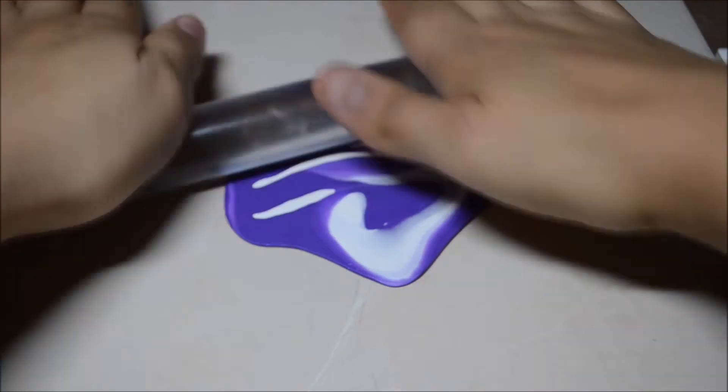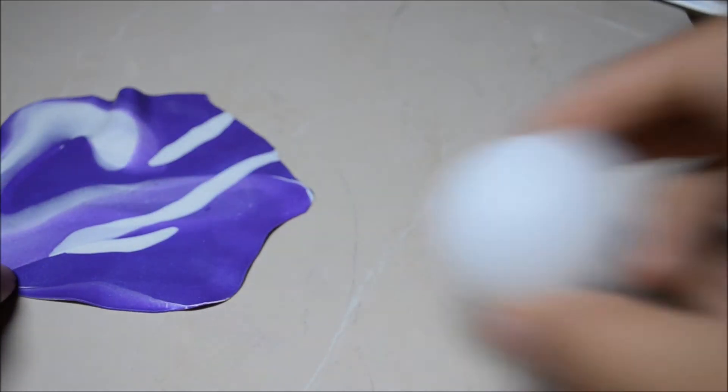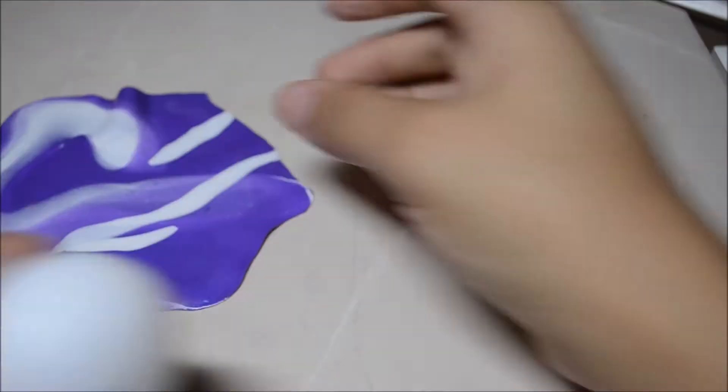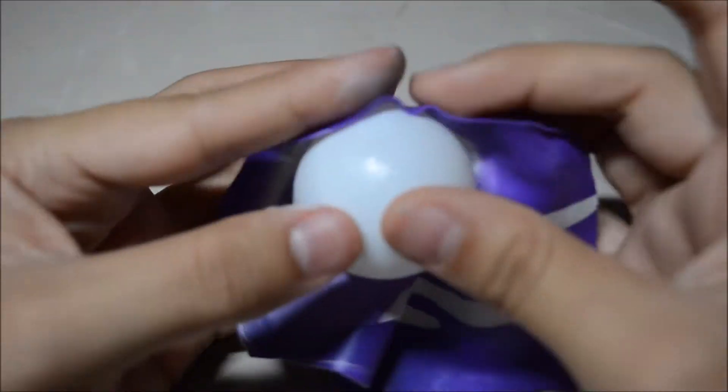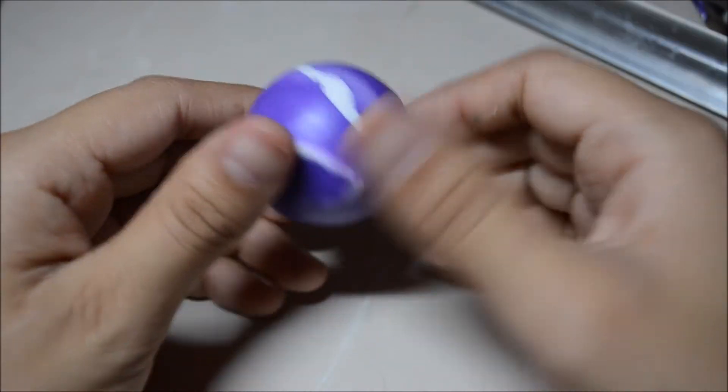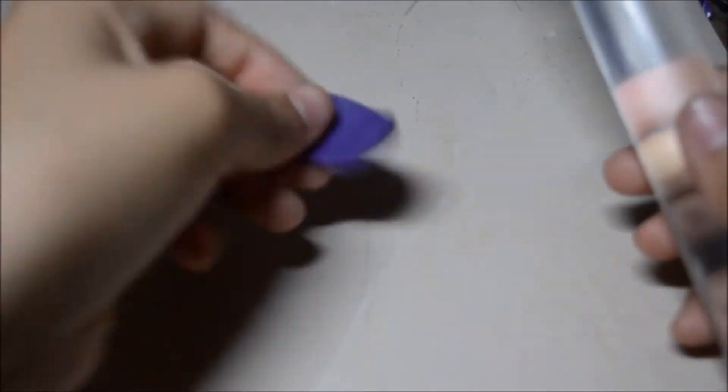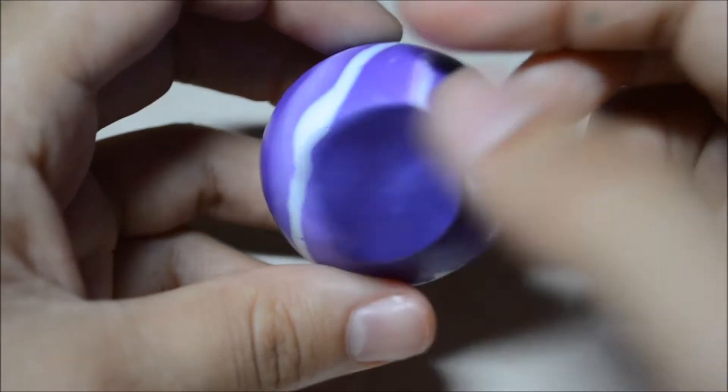And then rolled it out till it ended up with this. So then again, take the baking bond and wrap the clay around the ball, roll out the small purple one, cut out a circle, and attach it.